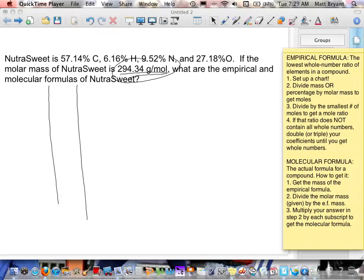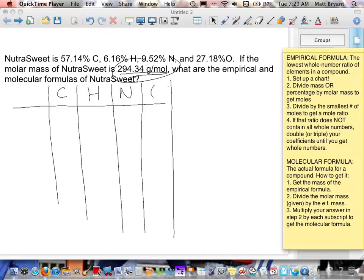I'm using the thin marker, so we make sure we fit everything in here. We're going to need four columns. We're going to need one for carbon, one for hydrogen, one for nitrogen, and one for oxygen. So, we've got our four columns.